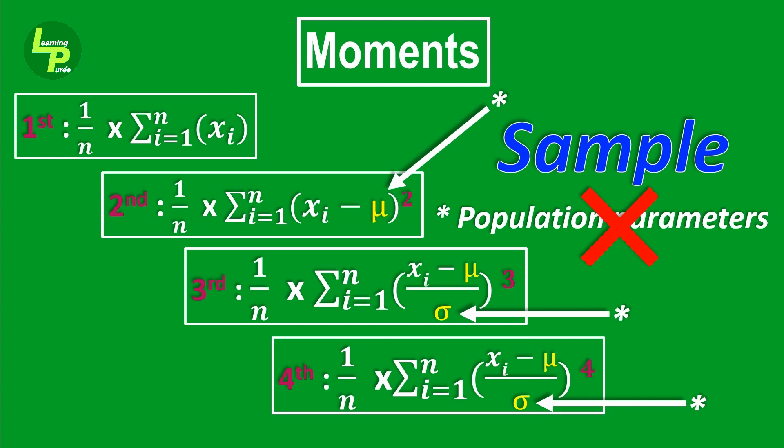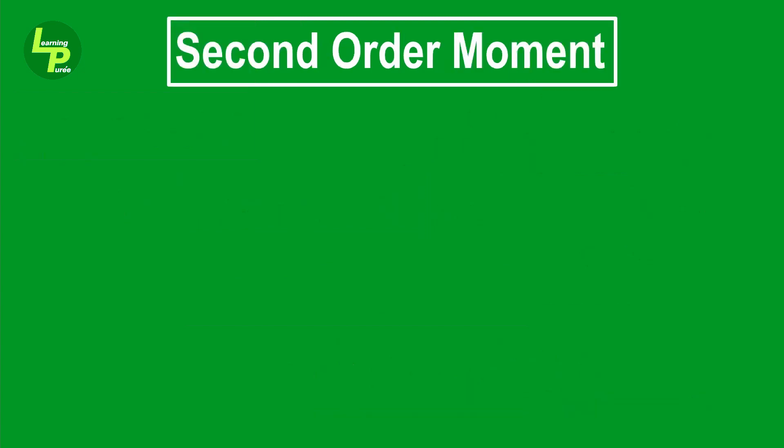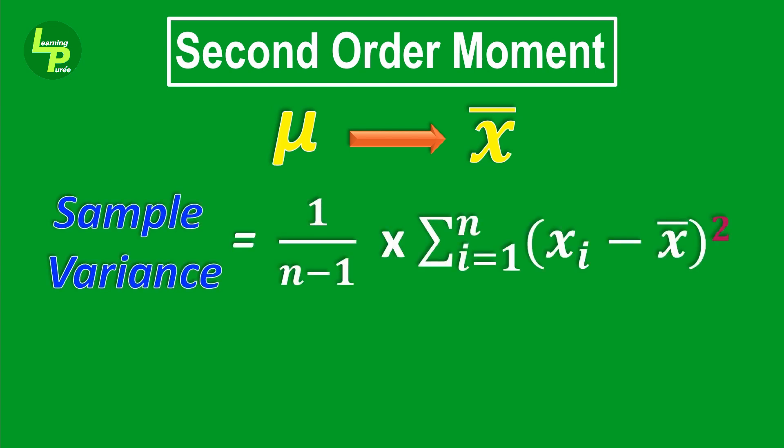Instead of the population mean μ, we will use the sample mean x̄ which is the estimate of the population mean to compute the second order moment. What we get is the sample variance.